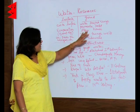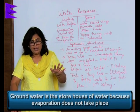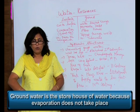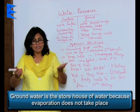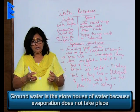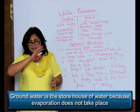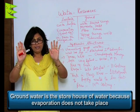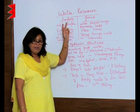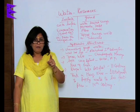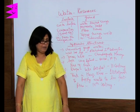Whereas ground water is a storehouse of water and its level is always the same, because evaporation does not take place. Unless we actually use this water, nothing happens to it — it remains intact. In surface water, even without using it, the level might dip because of the evaporation that takes place.